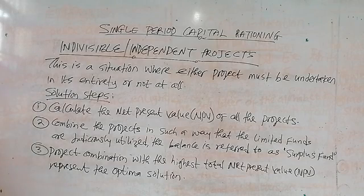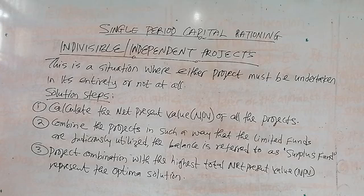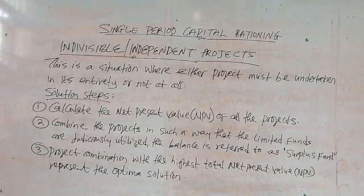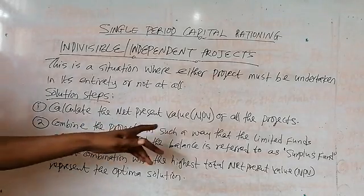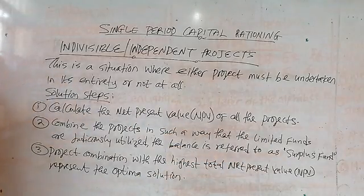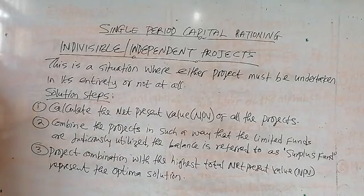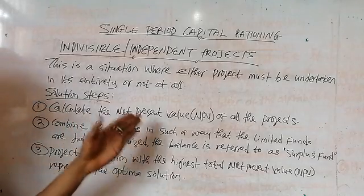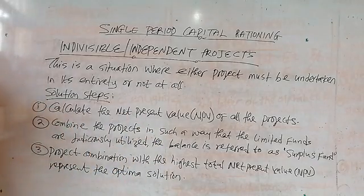What are the solution steps when you are faced with projects which are indivisible or independent? Step one is to calculate the net present value of all the projects. For example, if you have 10 projects, you have to calculate the net present value of all of them.